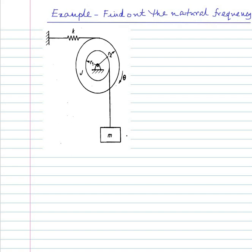The coordinates are to be measured from the static equilibrium position. So theta and x are both measured from the static equilibrium position. If you do that, you need not consider the static deflection of the spring, and neither do you need to consider the potential energy change due to the weight if using the energy method, or the weight if using the force method.